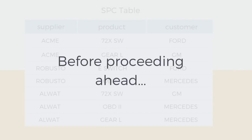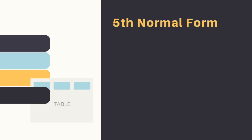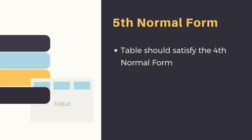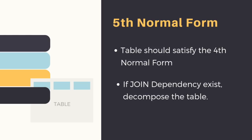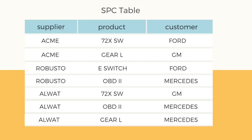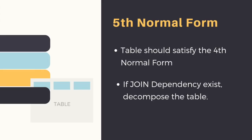Before proceeding ahead, let's see the requirements for the fifth normal form, or we can say when a table is in fifth normal form. It should be in fourth normal form — that is, no multi-value dependency should exist — and if join dependency exists, decompose the table. We will not explain join dependency directly as that will only lead to confusion. Rather, we will try to normalize the above table into fifth normal form and while doing so, talk about join dependency too.